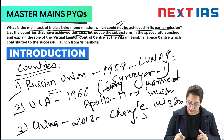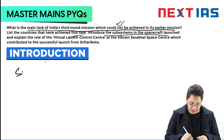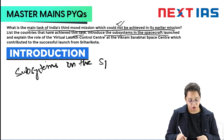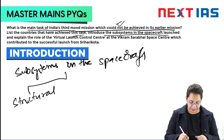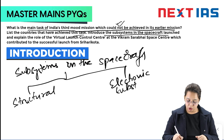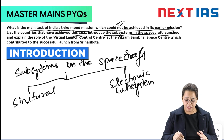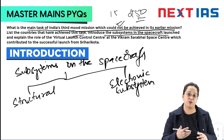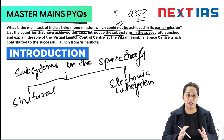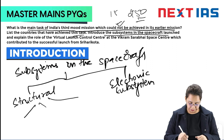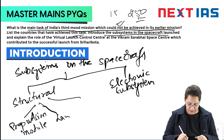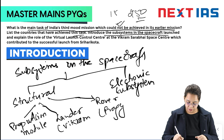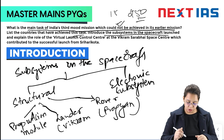The third part of the question asks to introduce the subsystems in the spacecraft launched. Broadly, these are divided into two categories: structural subsystems and electronic subsystems. In the structural part there were three components: the propulsion module, the lander — Vikram lander, and the rover — Pragyan.